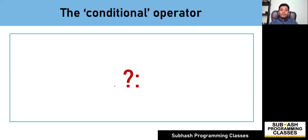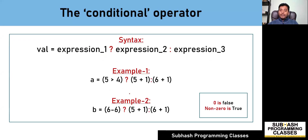Let's get started. The symbol question mark and colon is used to represent the conditional operator in C language. The conditional operator will take this form: val is equal to expression one question mark expression two colon expression three.